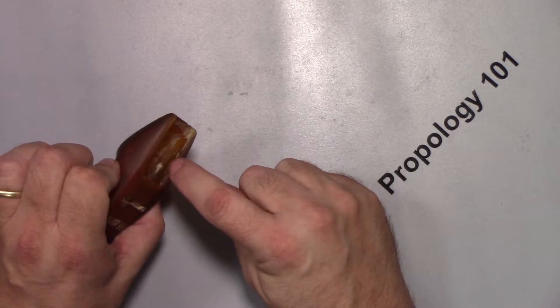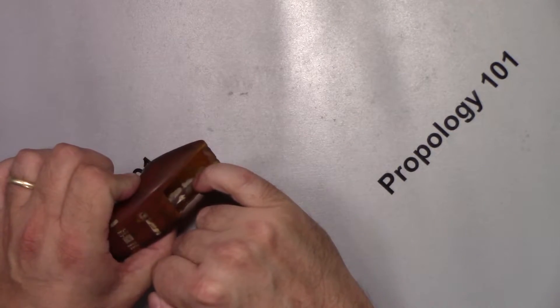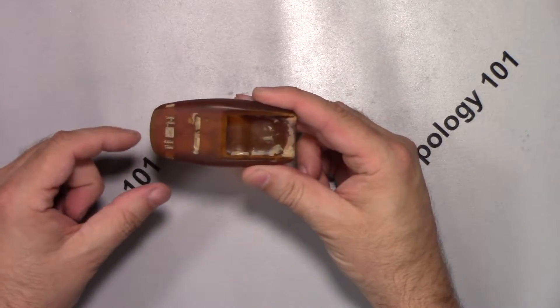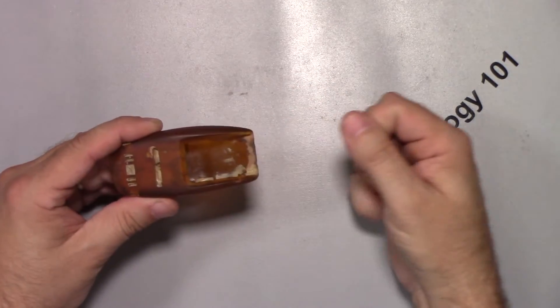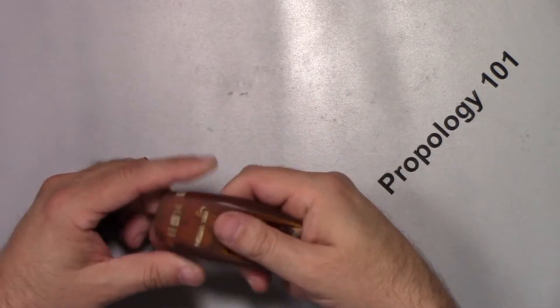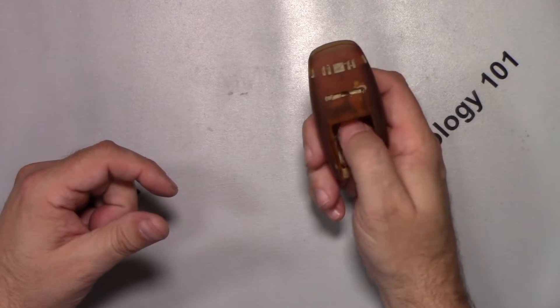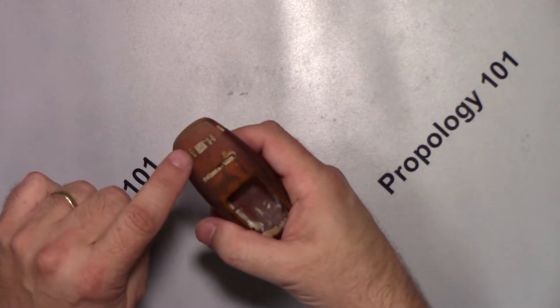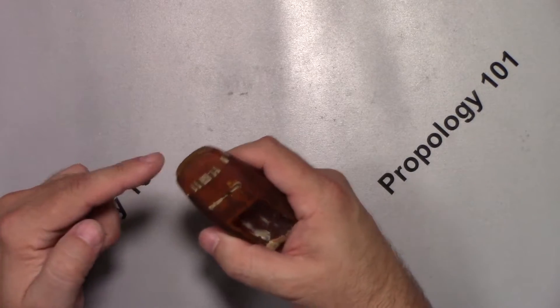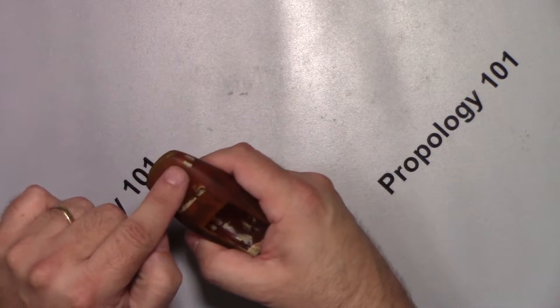The on-off switch was a slide switch inside of here. So to turn this phaser on, you would have to open this up, push the button, slide it back, hand it to the actor, and then they could push the button and have the firing ring here light up, which was two incandescent bulbs.